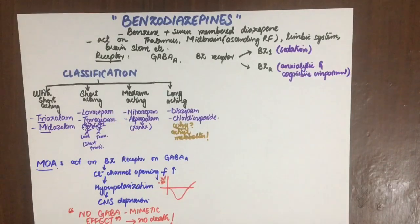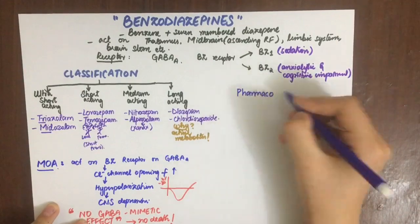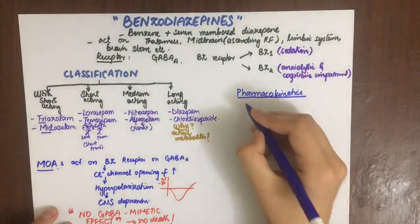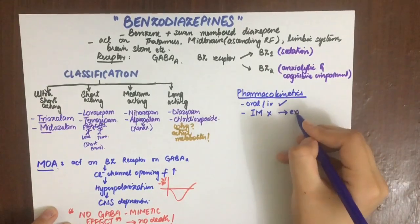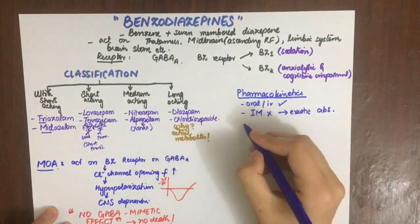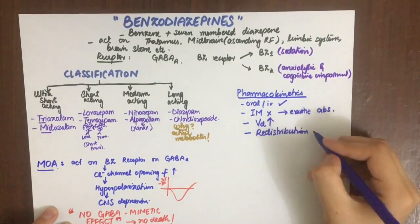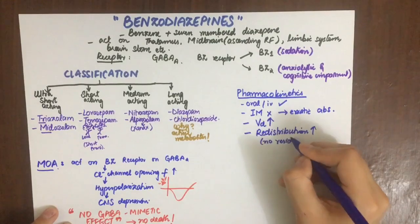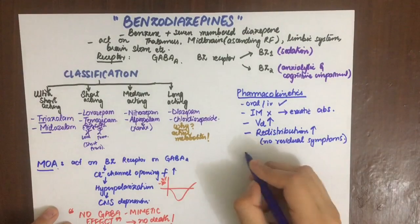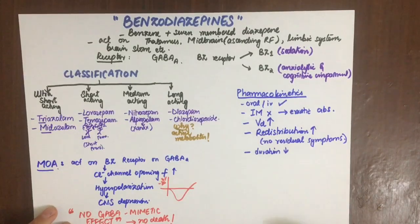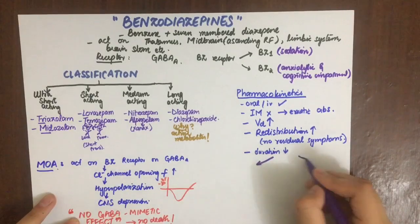Regarding pharmacokinetics: benzodiazepines can be given orally and IV. They are not given intramuscularly because of erratic absorption from that site. They have a high volume of distribution, and redistribution is also very high, so they have no residual symptoms and a short duration of action.